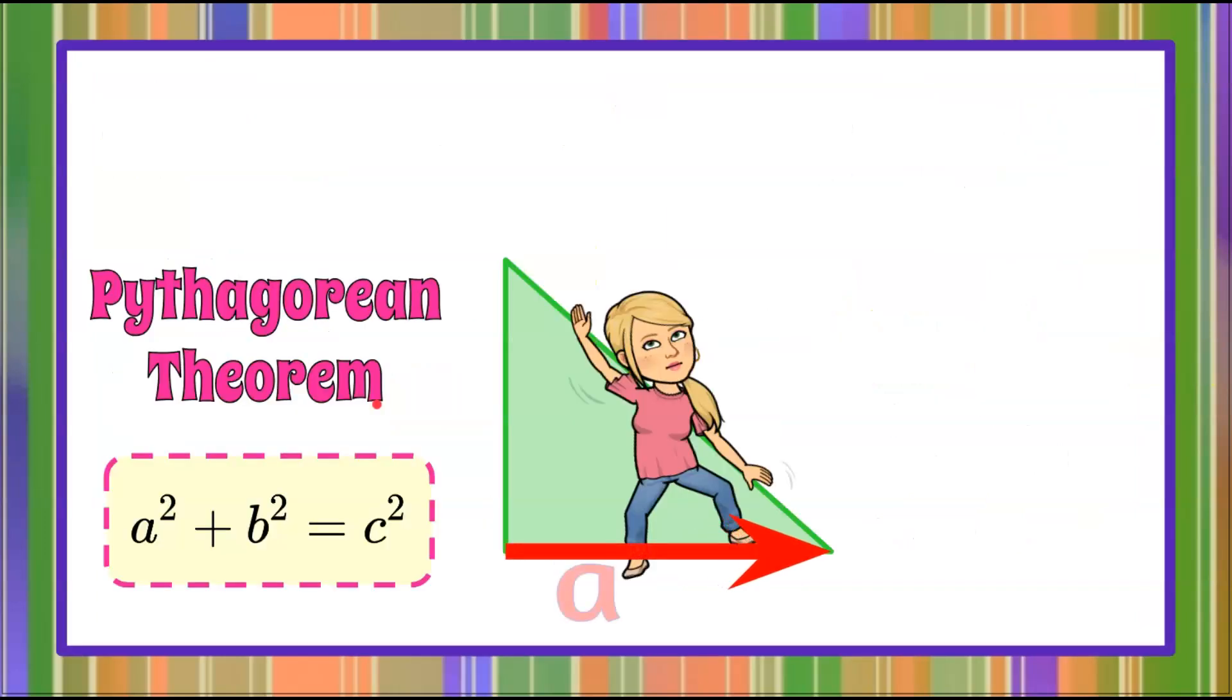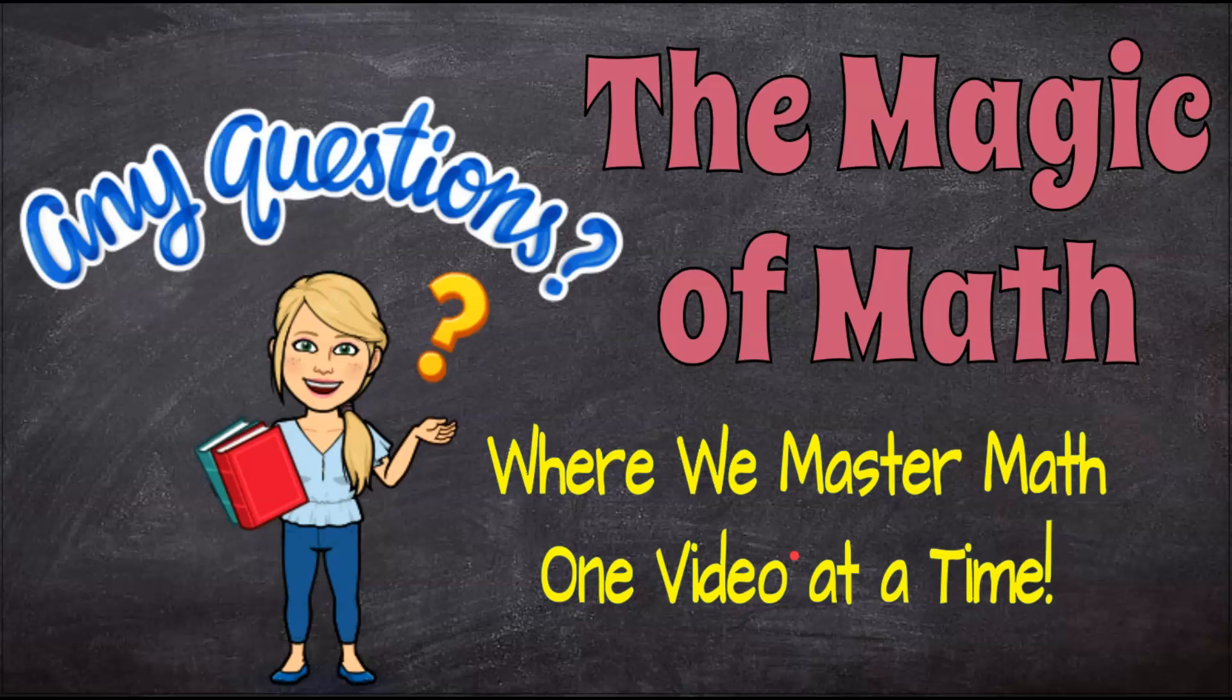And there you have Pythagorean theorem. The sum of the squares of the legs is equal to the square of the longest side, the hypotenuse. Thanks for joining me today at The Magic of Math, where we continue to master math one video at a time. I hope you'll come back soon. Subscribe and have a great day.